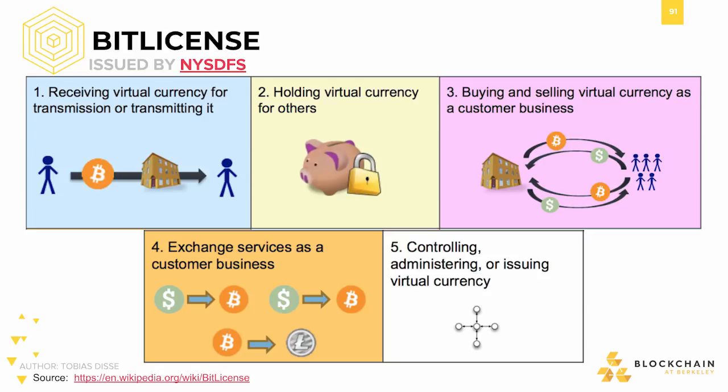New York has a separate license exclusively for cryptocurrencies, which applies to anyone performing any one of five acts: receiving virtual currency for transmission or transmitting it, holding virtual currency for others, buying and selling virtual currency as a customer business, providing exchange services as a customer business, and controlling, administering, or issuing virtual currency. An exchange known as Circle was the first to obtain a BitLicense. Coinbase also followed later, and Square is the most recent company to obtain a BitLicense, being the ninth.